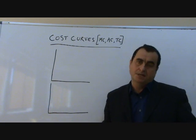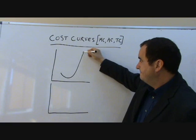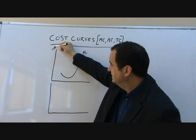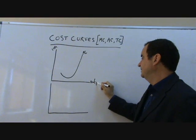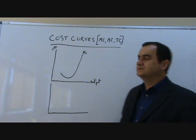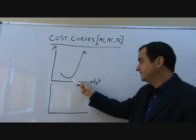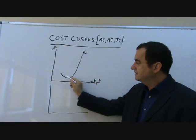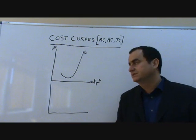MC is going to be shaped like this. What do I mean by this? Well, let's just label the axes. This is costs and this is output. MC is what we call U-shaped. It falls and then it rises, and it rises ever more steeply. What's happening here is it turns because of diminishing marginal returns.